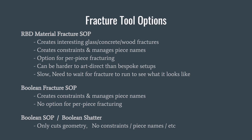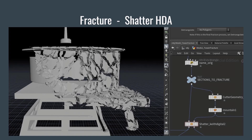The RBD Material Fracture can also process one piece at a time based on its name to fracture different sections individually. However, the Boolean Fracture doesn't have a per-piece option, so I built my own HDA to do my shattering. My shatter HDA is just a wrapper around the Boolean Fracture SOP.